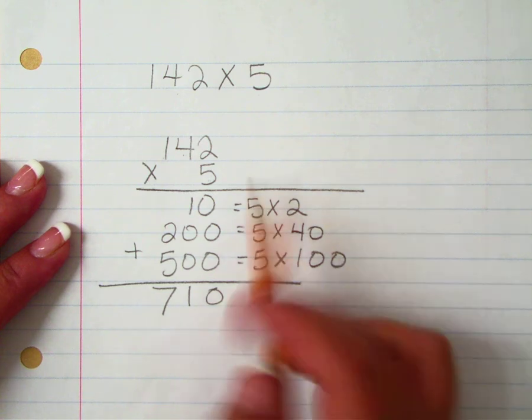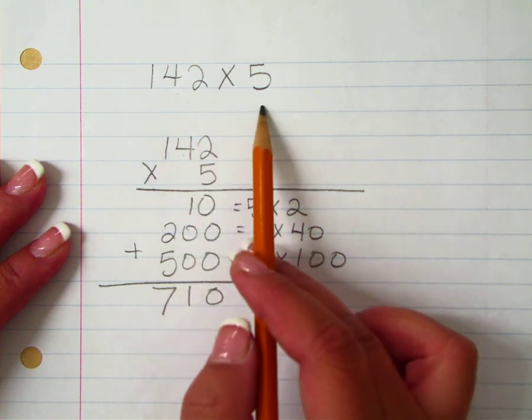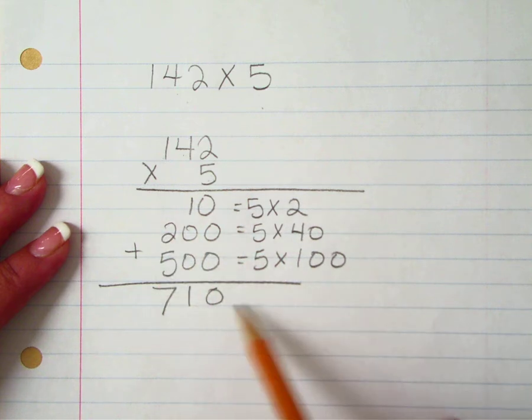That's how you multiply a multi-digit number by a one digit number using partial products.